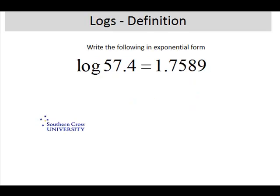The second question is similar. We have the log of 57.4 is equal to 1.7589. Once again it's implied that we have a base of 10 because we're using a common log, so when we rewrite that it's 57.4 is equal to 10 to the 1.7589.